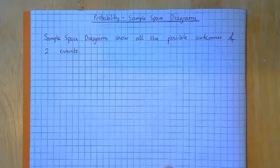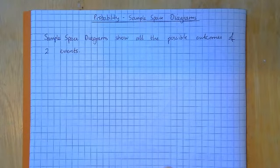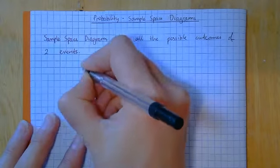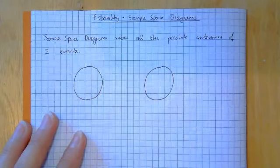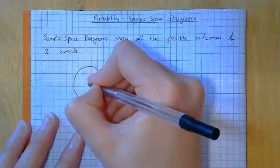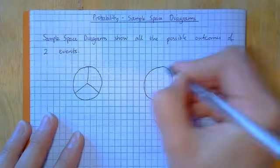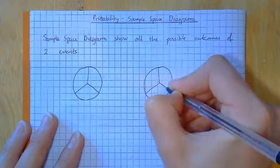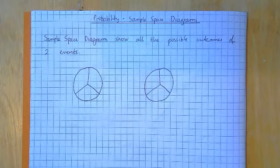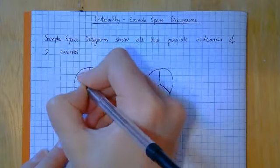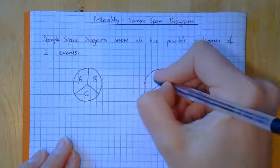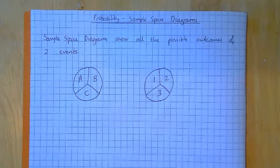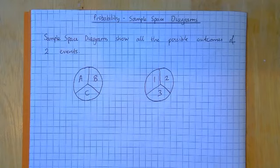I'd like you to draw two circles — like two spinners. Split your circles into three sections each. On this spinner I'm going to write A, B and C. And on this spinner I'm going to have one, two, three. So we're going to spin both spinners and write down what we get — we might get a B and a three, or a C and a one.